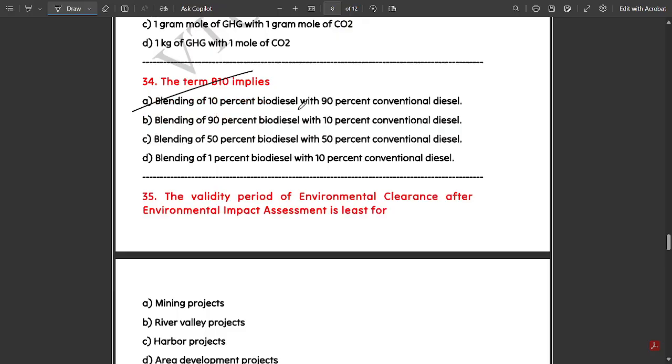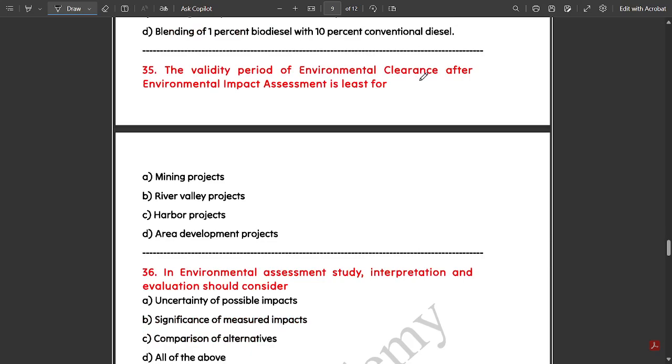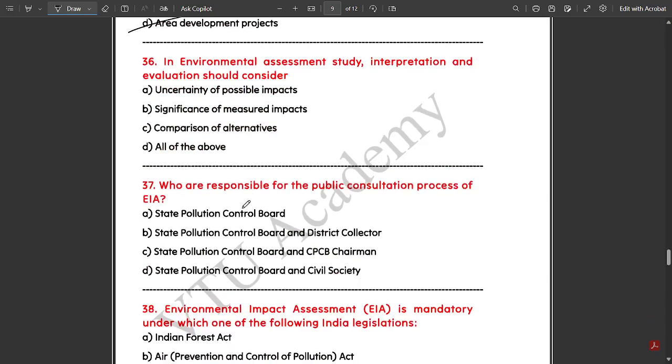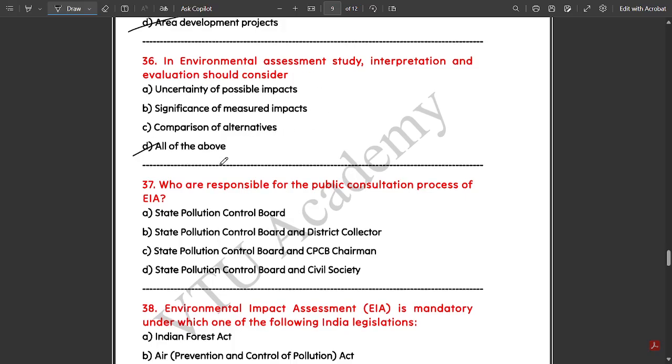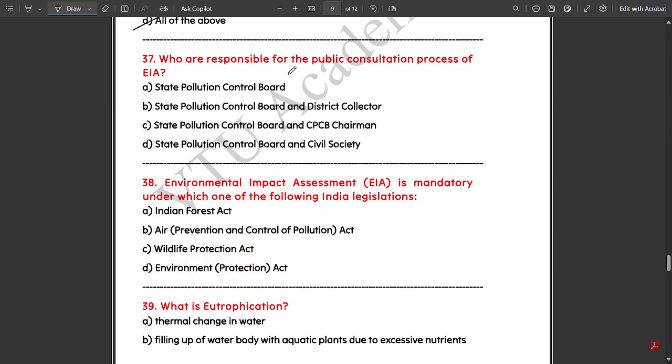The term B10 implies blending of 10 percent biodiesel with 90 percent conventional diesel. The validity period of environmental clearance after Environmental Impact Assessment (EIA) is for area developmental projects. In environmental assessment study, the interpretation and evaluation should consider all of the above: uncertainty of possible impacts, significance of measured impacts, and comparison of alternatives.